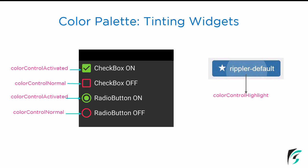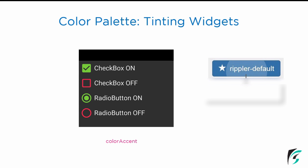What if we don't define all these properties for a widget? When the colorControlActivated, colorControlNormal, and colorControlHighlight attributes are not defined for our widgets, the default color provided to all widgets is colorAccent. The button, the radio button, the checkbox, and various other widgets defined in our application — whether the checkbox is on or off, as well as the ripple effect — will all use the color colorAccent by default.